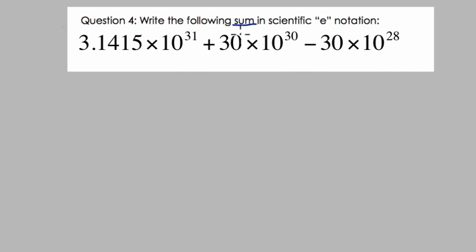So let's write the following sum in scientific e-notation. That means we're adding. There's a negative sign here, so we can think of that as adding a negative, but ultimately we can add these numbers. Which numbers? Well, each number is grouped by multiplication. So really these three numbers here, we're adding them.